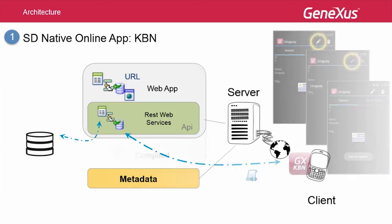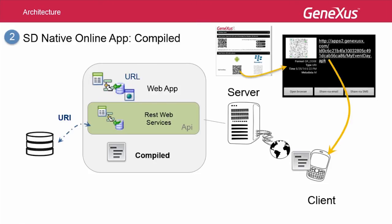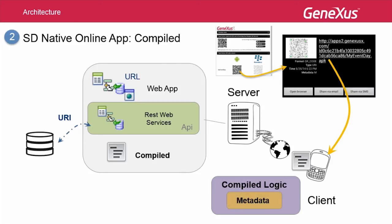Now that we've seen how it works with the KBN, we'll move on to the second option, which in fact will be the one we must necessarily use at the end of the cycle for the cutover: compiling the application. Each smart device platform has its own language, and therefore its own extension for the compiled file. For example, for Android, it is APK. This file must be downloaded and installed on the device, making the KBN interpreter no longer necessary, because it's like a customized KBN with the application's URL already configured. It'll encapsulate all the metadata and images. Therefore, we will only need to access the server to execute the REST web services that will return the current data already processed.